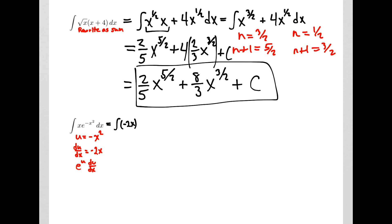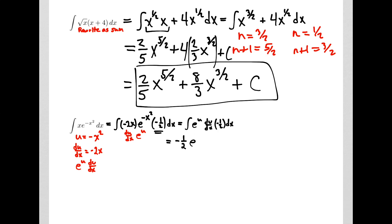I can fix constant multiples. So let's rewrite this. I want a du dx, so let's put negative 2x times e to the negative x squared. Here's my du dx and here's my e to the u, but I changed the problem — I didn't have that negative 2 there. So I need to correct by multiplying by negative 1 half. The negative 2 and the negative 1 half cancel. This is a constant multiple times the integral of e to the u du dx, and when I do the integral, I get negative 1 half times e to the negative x squared, plus a constant.